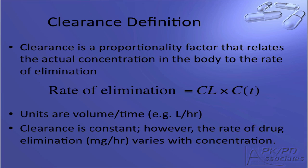The definition of clearance is shown here. It is a proportionality factor that relates the concentration in the body to the rate of elimination. As an equation, it can be written as: rate of elimination equals clearance times concentration. The units for clearance are volume per unit time. In most cases, clearance is constant, although the rate of drug elimination changes with time.